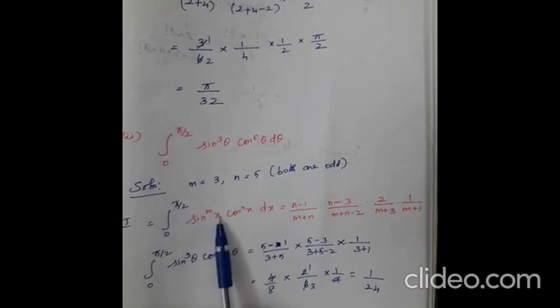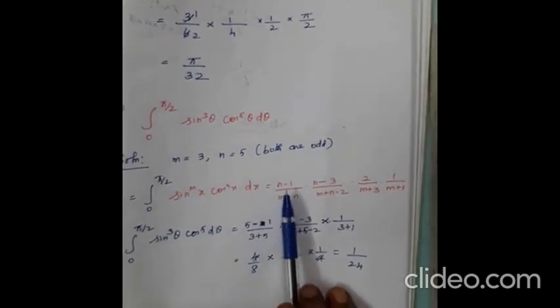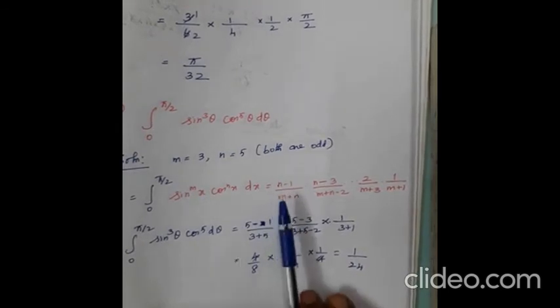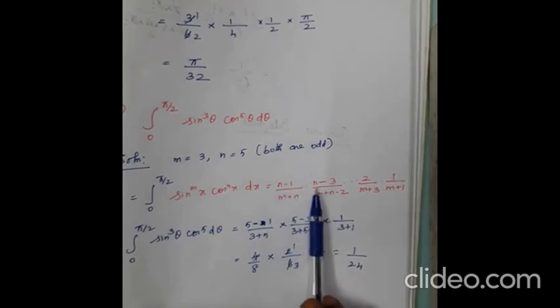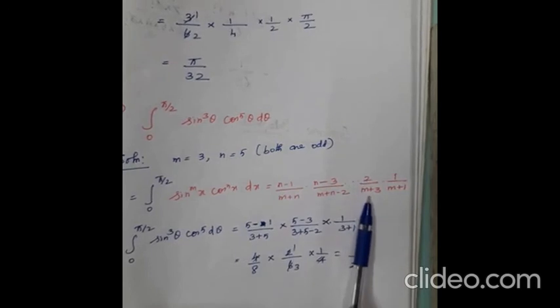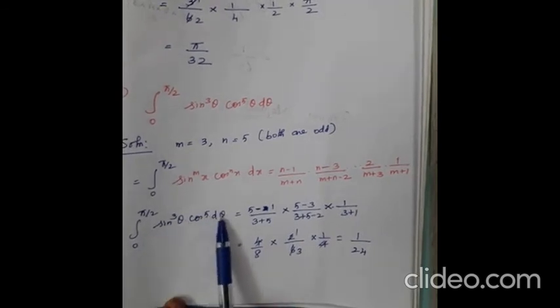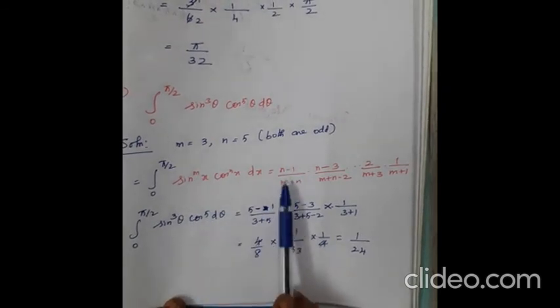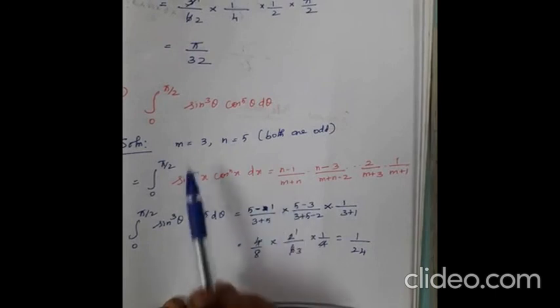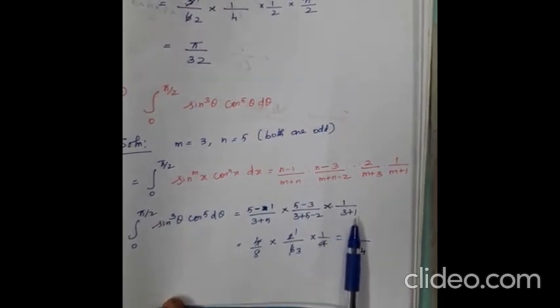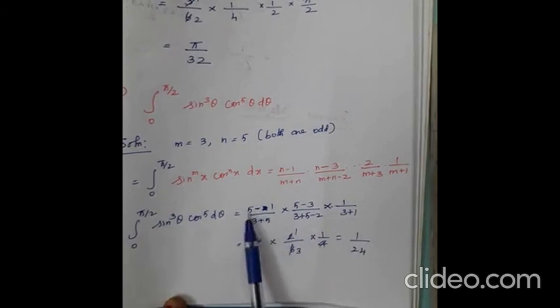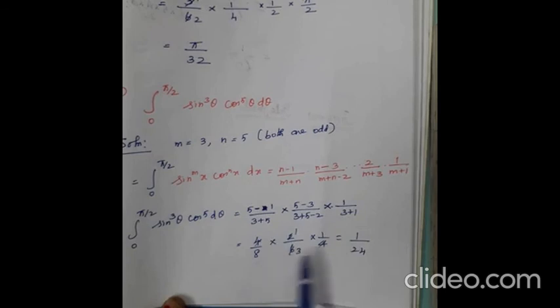Since both m = 3 and n = 5 are odd, we apply the formula: integral from 0 to π/2 of sin^m(x) · cos^n(x) dx = (n−1)/(m+n) · (n−3)/(m+n−2) etc. up to 1/(m+1). Substituting n = 5: (5−1)/(3+5) · (5−3)/(3+5−2) · 1/(3+1) = 4/8 · 2/6 · 1/4. Simplifying, we get 1/24. The formula is very important. Thank you.